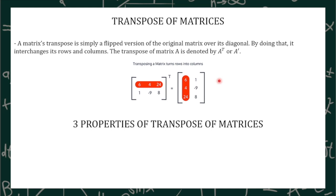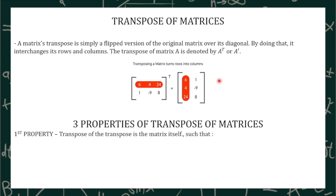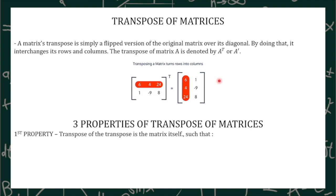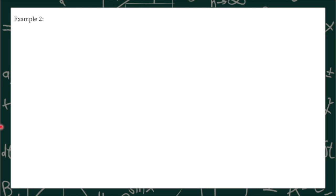There are three properties of transpose of matrices that we are going to discuss today. The first property states that the transpose of the transpose is the matrix itself, such that the transpose of the transpose of A is equal to A. Let's take a look at example number 2.